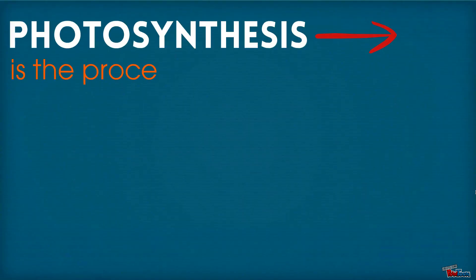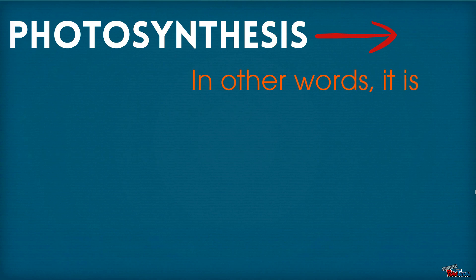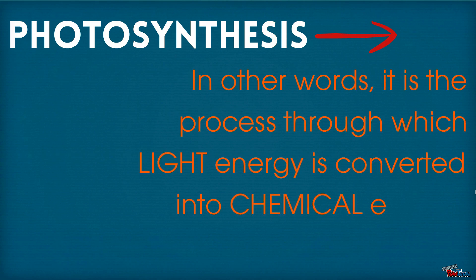Photosynthesis is the process plants and algae go through in order to use energy for making food. In other words, it is the process through which light energy is converted into chemical energy.